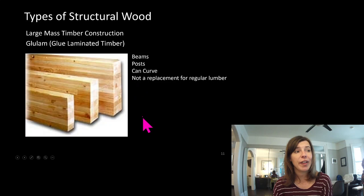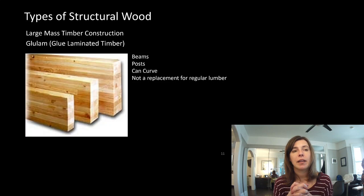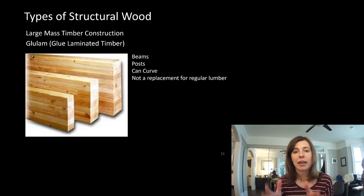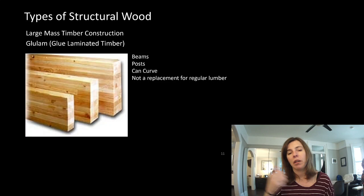Glulam is essentially a series of 2x4s or 2x6s stacked on top of each other and then infused with glue to make them act as one thing. The gluing together is very, very, very important — so important that in two lectures we're going to spend an entire lecture talking about what it means to make something composite. Instead of it being just a series of elements stacked on top of each other, the gluing them together makes it act as one big member, and how does that make a difference in our design? We're going to talk about that in two weeks.